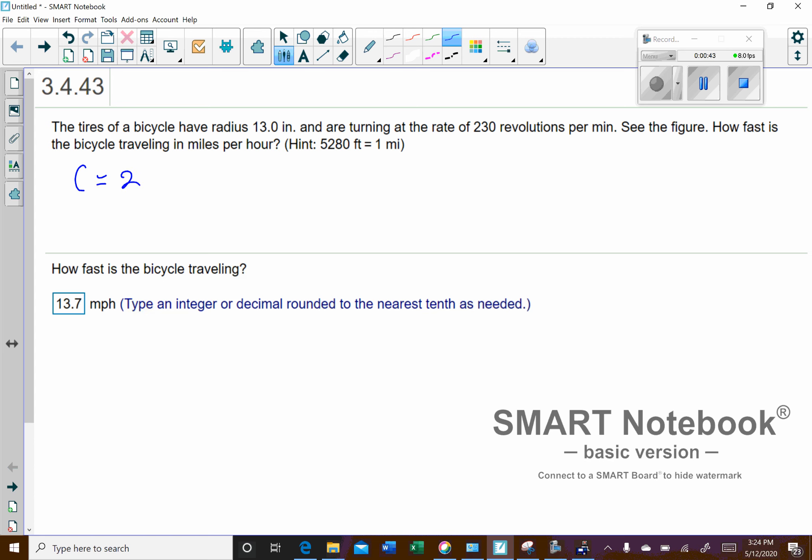So circumference is 2πr, right? So the circumference is going to be, when we plug in 13 for radius, we're going to get 26π. And we're just going to leave it like that. We don't want to start rounding until the very end. And so that's the circumference, and that is in inches. We'll eventually want to convert that to feet and then to miles, but right now that's a fairly small number, so we don't want to convert that quite yet.